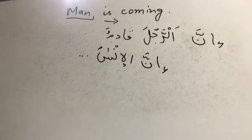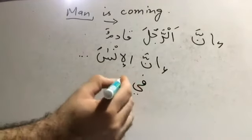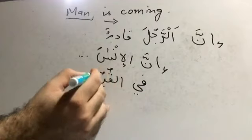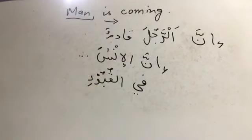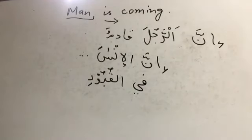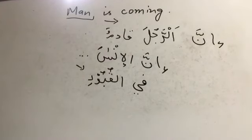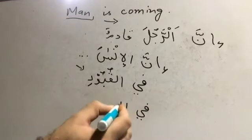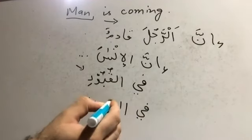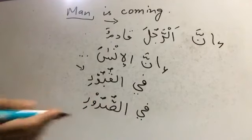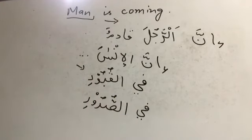Afala ya'lamu idha bu'thira ma fi al-qubur. Qubur will be genitive because it is preceded by fi. Whatever is in the qubur — qubur is the plural of qabr. Wa hus-sila ma fi as-sudoor. This is again genitive. You can check these examples in the Quran itself, and that will confirm our grammar.